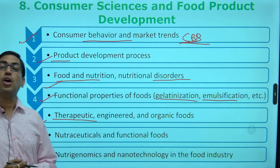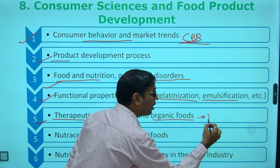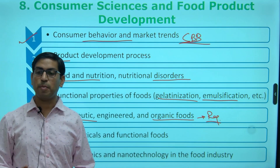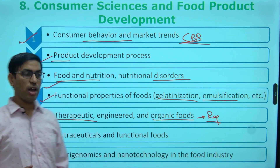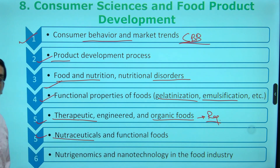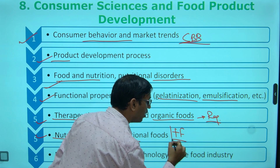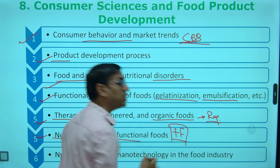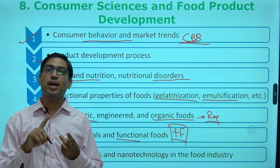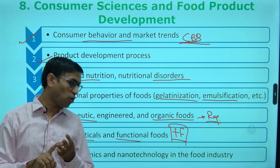Therapeutic foods, organic foods — what are the requirements, what are the labeling requirements, what are the specific requirements — all are most important. Finally, nutraceutical foods, functional food, and even fortified food — specifically for milk, even for atta, and even for salt.